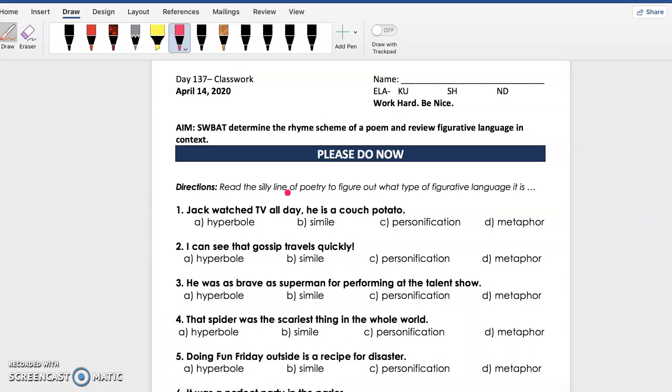Alright, let's go ahead and begin. Number one: Jack watched TV all day, he is a couch potato. I know that they're comparing Jack to a couch potato but they're not using the words like or as, so this is a metaphor.